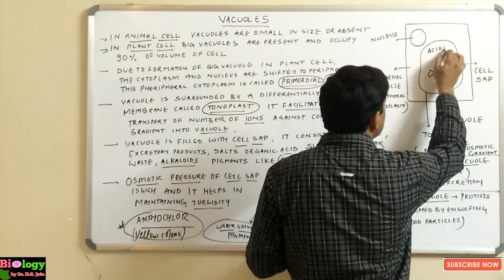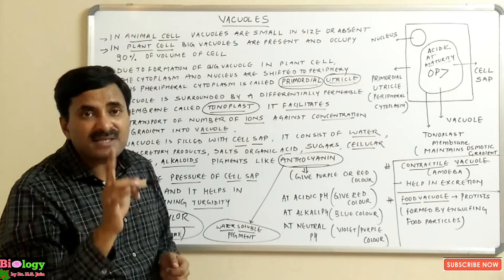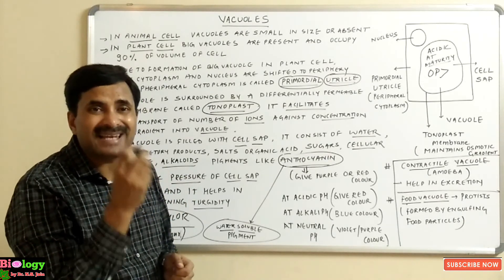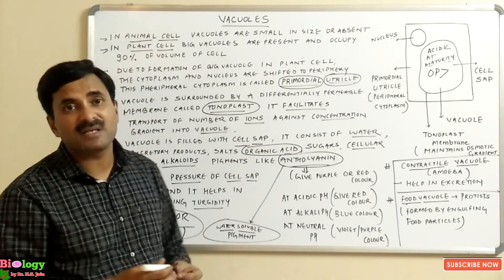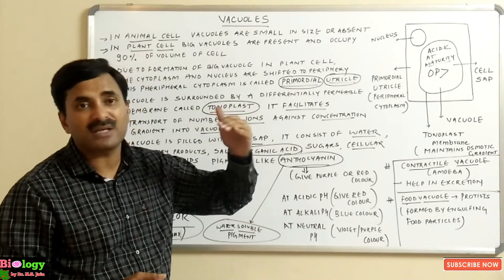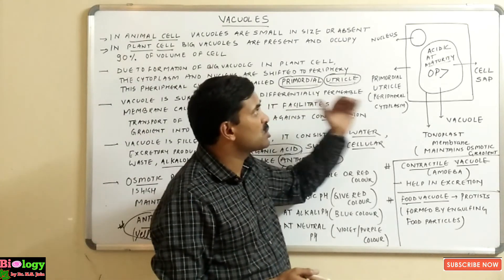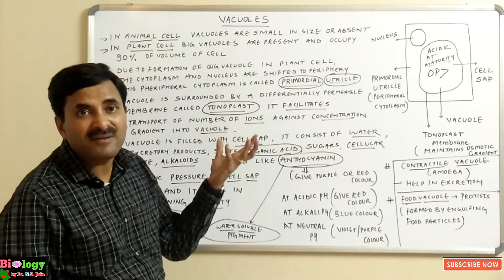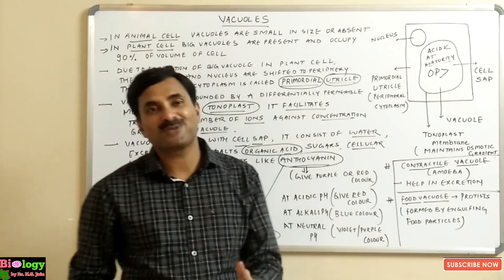You must remember that cell sap is acidic at maturity. In the beginning, the cell sap is neutral in nature, but as it consists of many organic acids, the cell sap becomes acidic. So in the young stages the cell sap is neutral, but at maturity it becomes acidic. The vacuole is present in large size in the plant cell and in very small size in the animal cell.